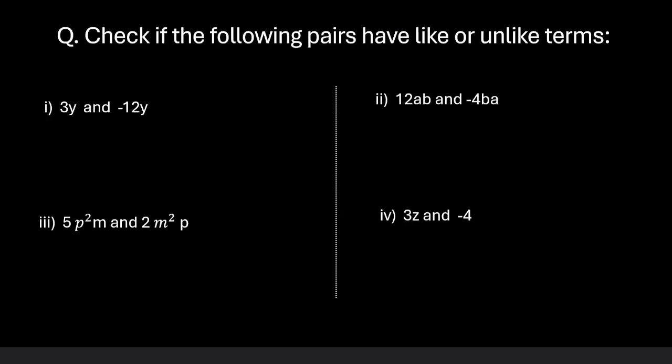Let us now look at some questions. Check if the following pairs have like or unlike terms. We'll look at the first part. We know now that we will ignore the coefficient. Here we have one variable which is y and here also we have one variable which is y, and y has a power of 1 in both cases. So these are like terms.